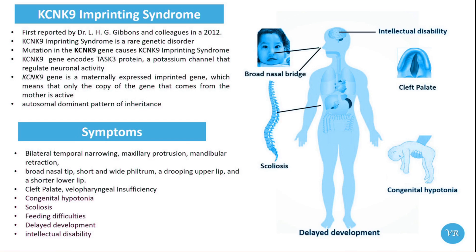KCNK9 Imprinting Syndrome was first reported by Dr. Gibbons and Khalid in 2012. The disorder is characterized by genetic imprinting defects where the expression of the KCNK9 gene is influenced by the parent of origin.